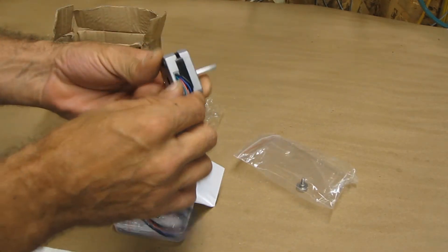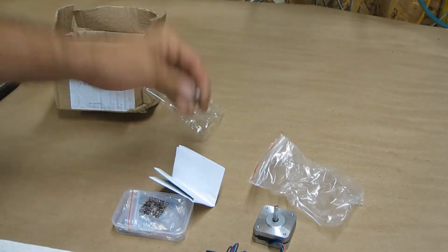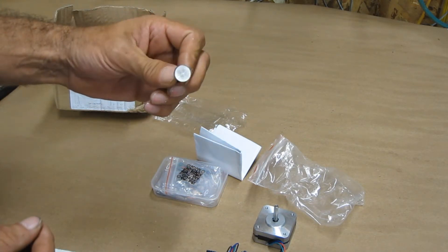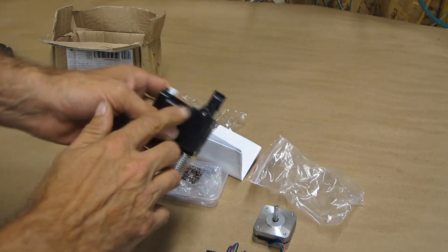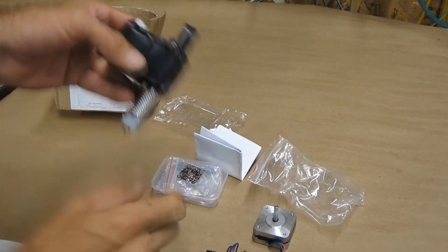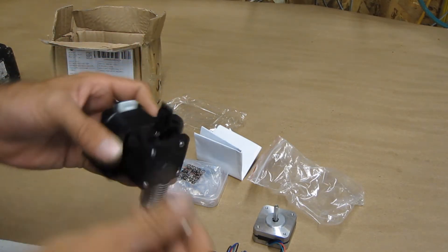There's the pancake motor. This is the little thumb screw adjuster. My Titan clone didn't have the adjuster knob for the tension, it had a screw. If you can see right in there, it's just an allen head screw. So this actually takes place of that so you can adjust the tension.